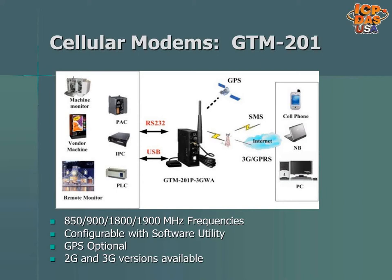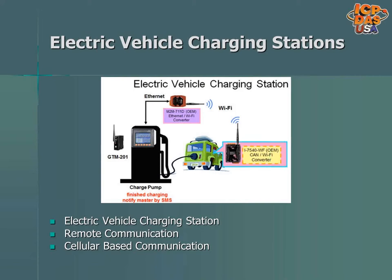Cellular modems can be connected to controllers or PCs, and can allow remote monitoring of machines and devices through the cellular network. They use a SIM card for cellular communication and are available for use with the 2G and 3G networks. They are set up with a software utility. GPS versions are available for mobile type of applications. Cellular modems are being used in electric vehicle charging stations. They are connected to ViewPak touch screen controllers inside of charge pumps. The ViewPaks are also connected to Wi-Fi converters, so they can wirelessly communicate with vehicles to get the charge information. An I-7540DWF Wi-Fi to CAN converter connected to the vehicle and a Wi-Fi converter connected to the ViewPak controller allows the charge pump to know when the vehicle is done being charged. A text message is sent to the owner of the vehicle when it's done charging.